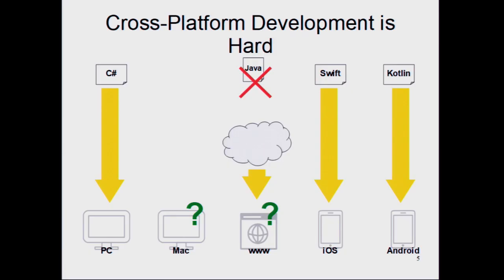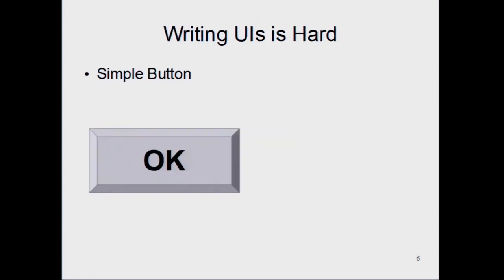So why would you want to do Java on JavaScript? Cross-platform development is hard, and one of the reasons is that all the platform makers want you to lock into their ecosystems — their walled gardens. They all try to force you to use a different language for every single platform. On Windows they want C#, on iPhone they want Swift, on Android they're now pushing Kotlin. It's really a pain to have to learn all these different languages and write your code multiple times.